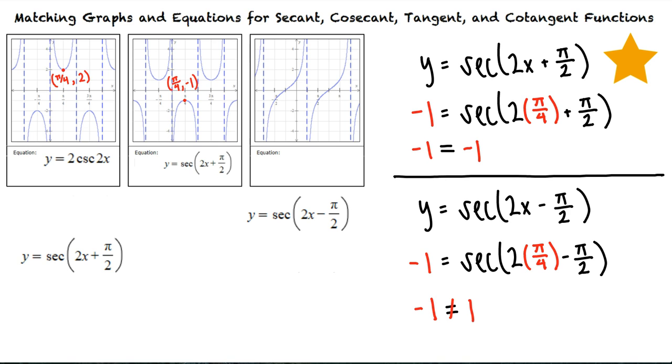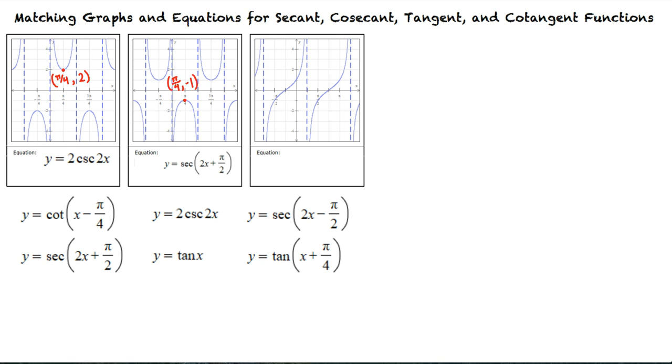Looking at our final graph, which equations do you think would be possibilities for this graph? Well, using what I know about general trig functions, this is the graph of a tangent or cotangent function. So we have to choose between these three possibilities.